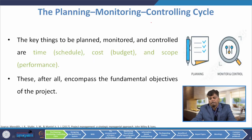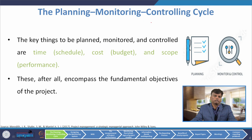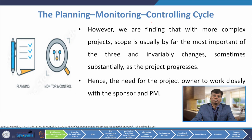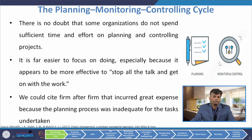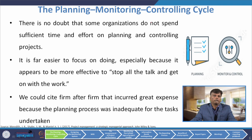We will start with Planning, Monitoring and Controlling Cycle. The key things to be planned, monitored and controlled are time, cost and scope, as these encompass the fundamental objectives of the project. However, with some more complex projects, scope is usually by far the most important — the scope is what we keep changing. Hence, the project owner needs to work closely with the sponsors and the project manager.